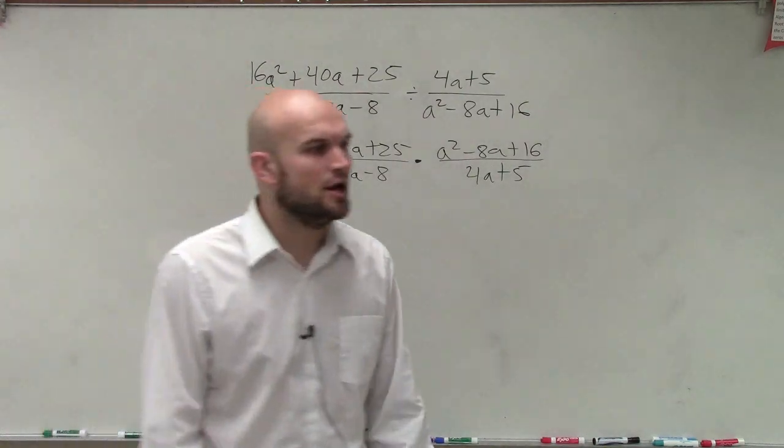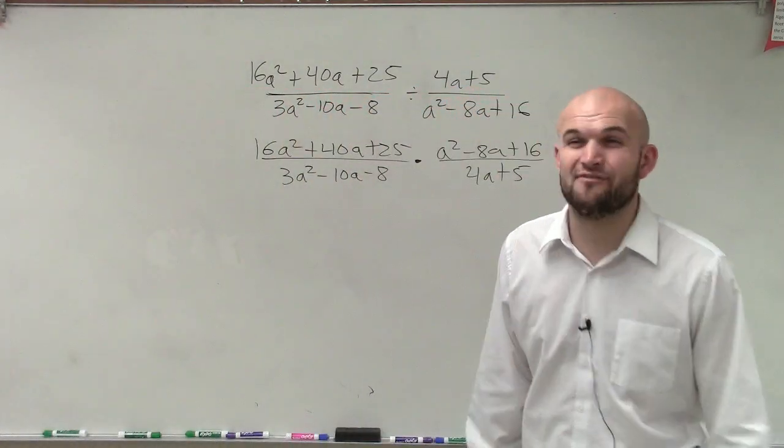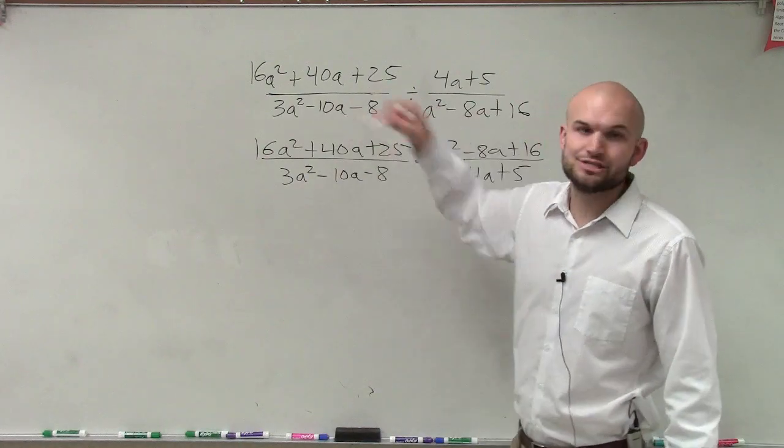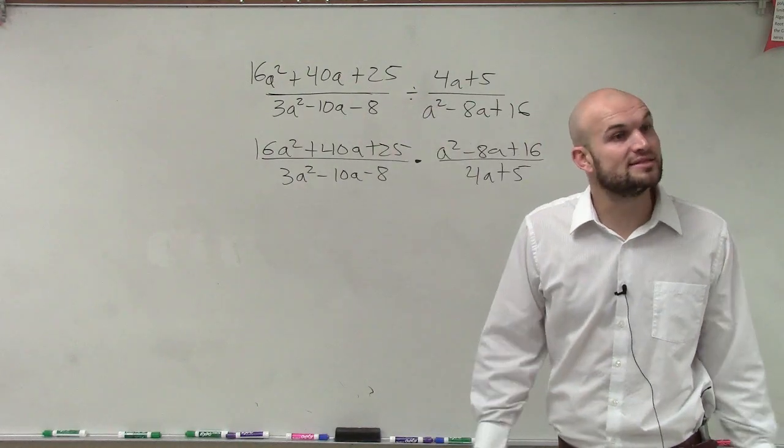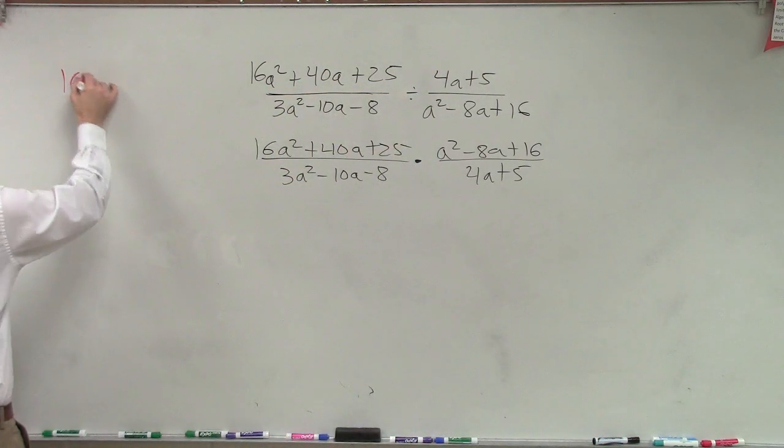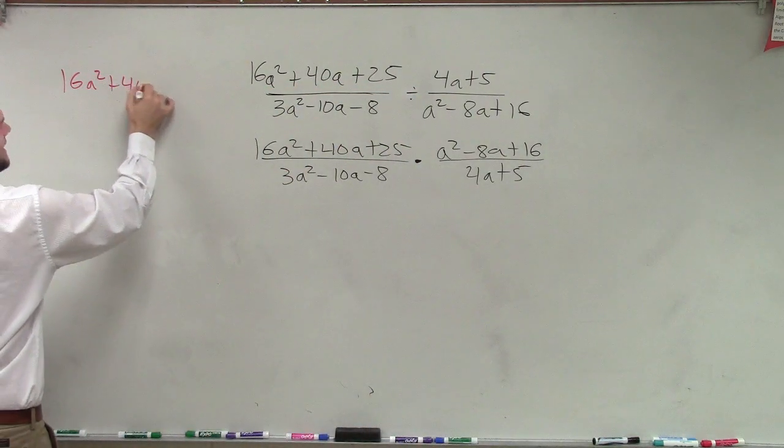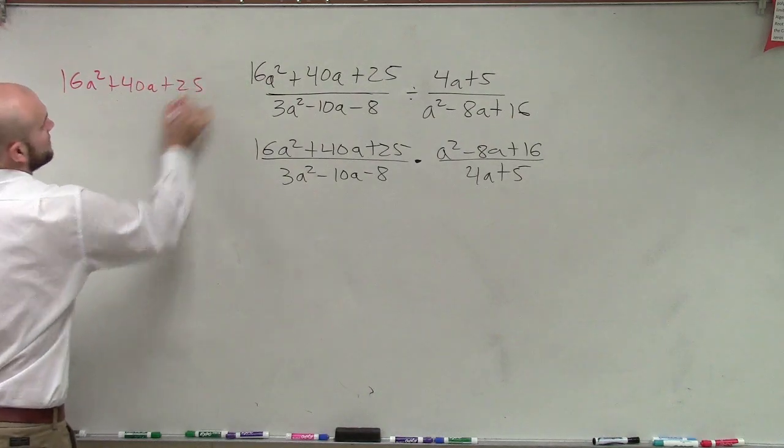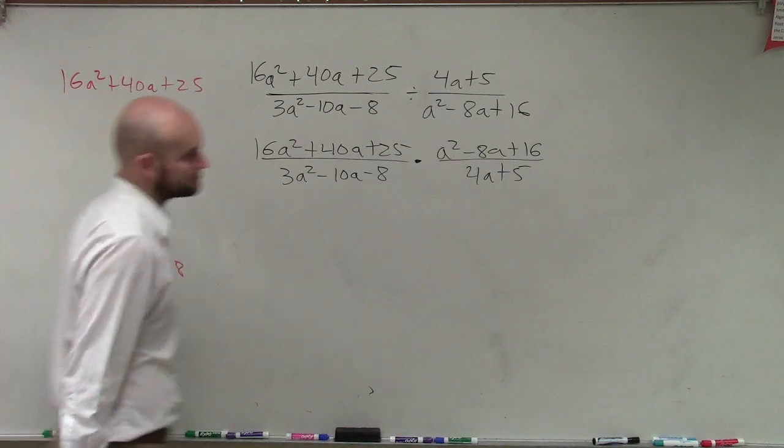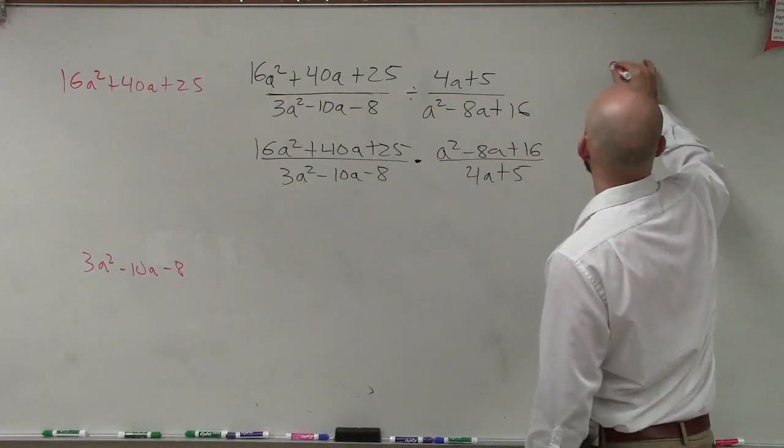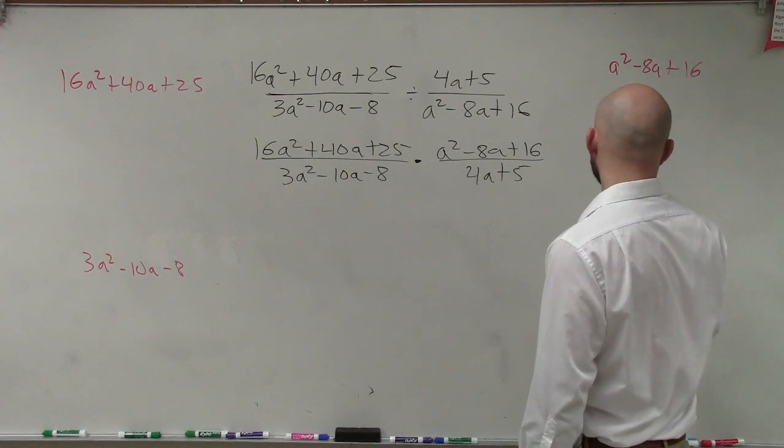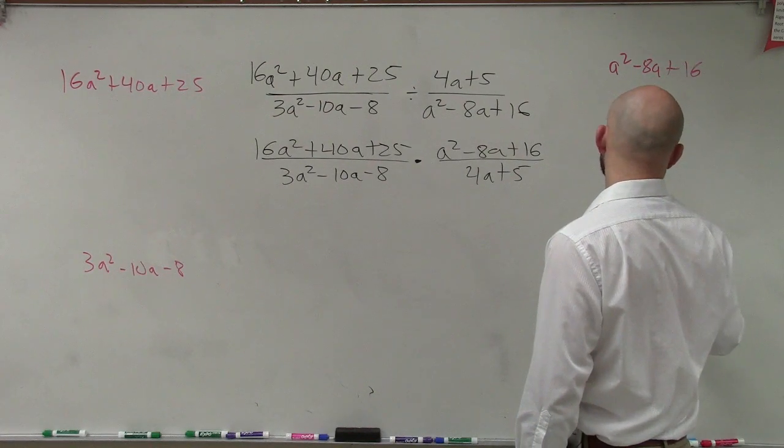Alright, so ladies and gentlemen, on a big problem like this, what I would do is I would use a lot of extra work. And with all my extra work, what I'd do is I'd write out each numerator and denominator of each one and see how I can, if at all, simplify it. So the first one I'd have 16a squared plus 40a plus 25. On the bottom I'd have 3a squared minus 10a minus 8. Over here I'll write a squared minus 8a plus 16. And over here I have 4a plus 5.